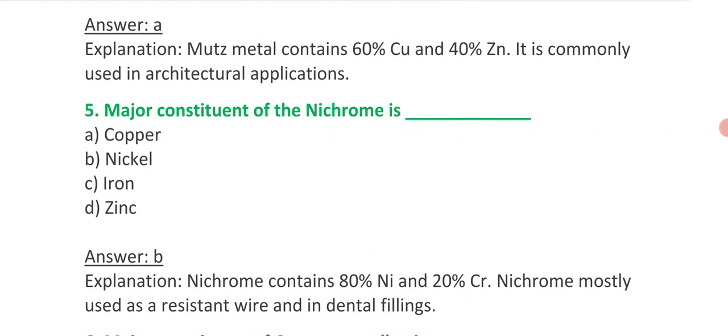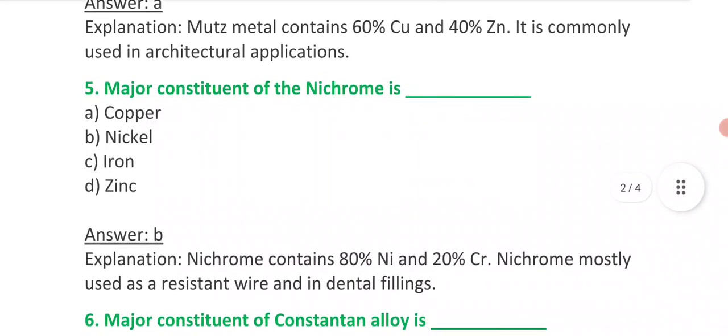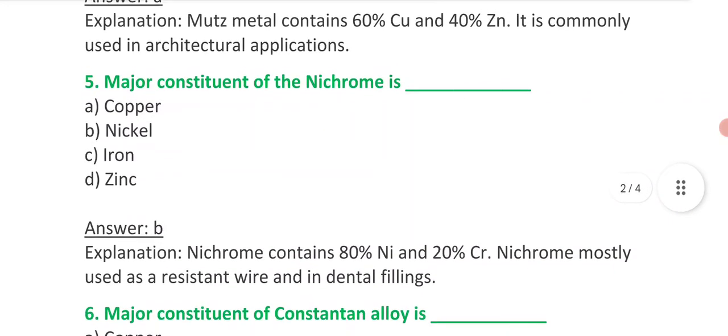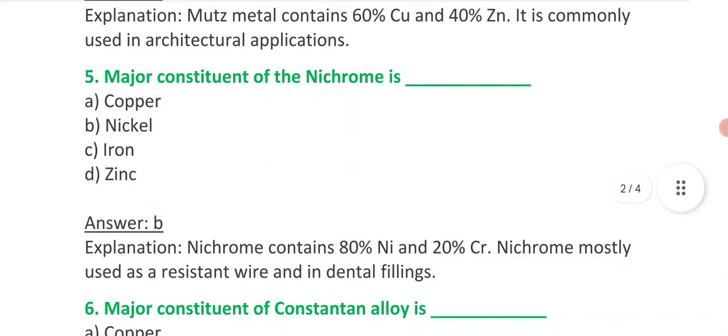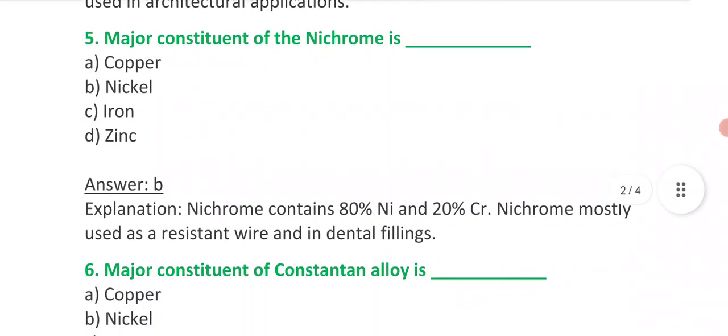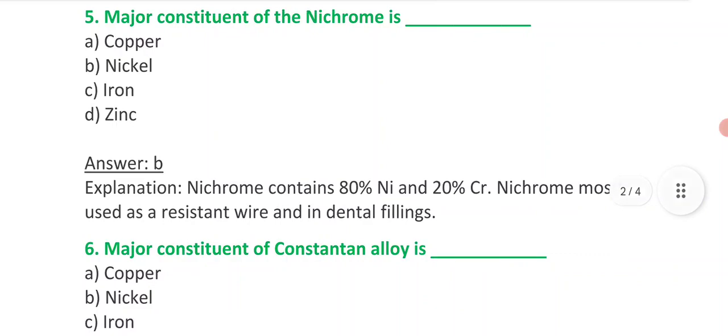There is 80% nickel and 20% chromium in nichrome. And it is used as resistance wire and in dental fillings.